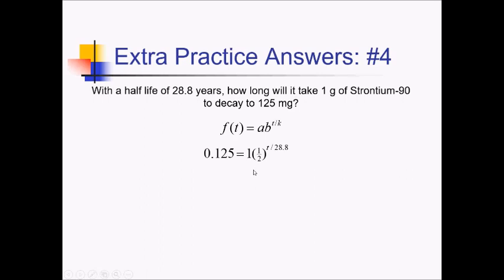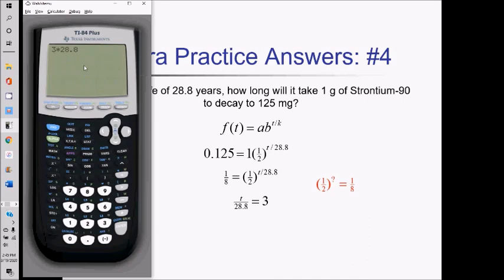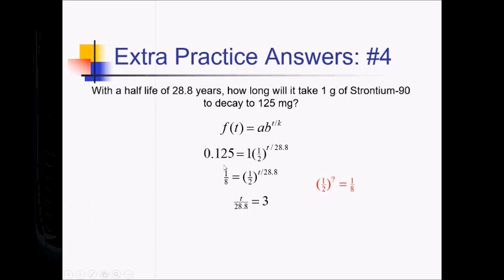Cleaning this up: the 1 doesn't really matter. 0.125 equals 1/8, so we have one-half to some exponent equals 1/8. One-half to the third power gives 1/8, so T over 28.8 must equal 3. Multiplying by 28.8: 3 times 28.8 gives 86.4 years.